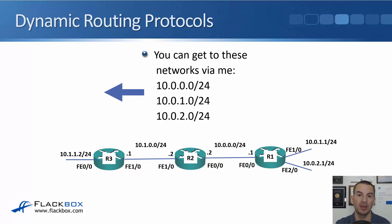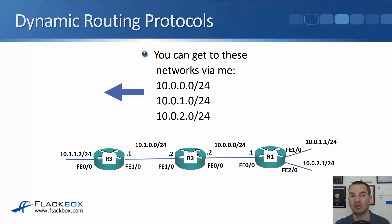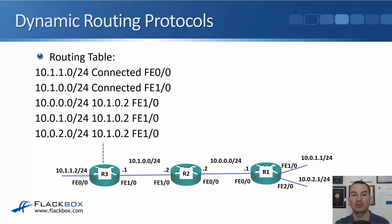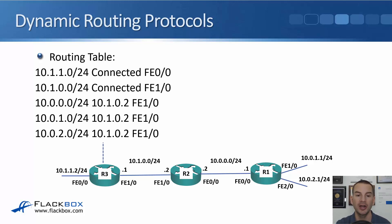R2 also has a relationship with R3, so it will advertise information there as well. R2 tells R3 it can reach 10.0.0.0/24, 10.0.1.0/24, and 10.0.2.0/24 via R2 — not just directly connected routes, but also the routes learned from R1. R3 can then update its routing table: it has direct routes to 10.1.1.0/24 and 10.1.0.0/24 on FastEthernet 0/0 and 1/0, and the learned routes 10.0.0.0/24, 10.0.1.0/24, and 10.0.2.0/24 are all reachable out FastEthernet 1/0 with a next hop of R2 at 10.1.0.2.